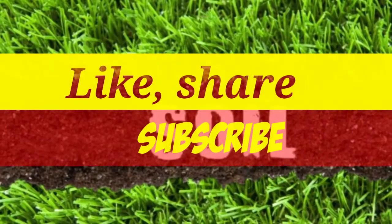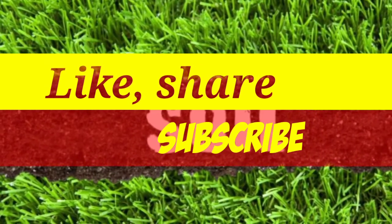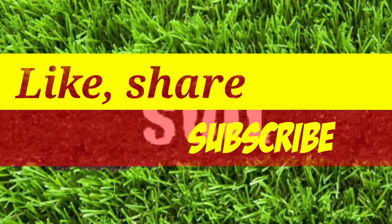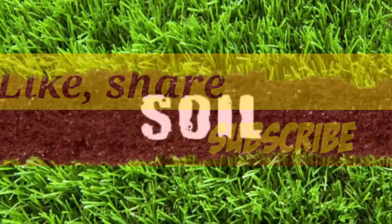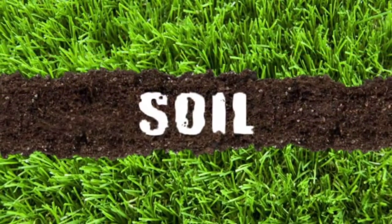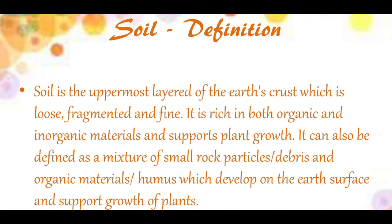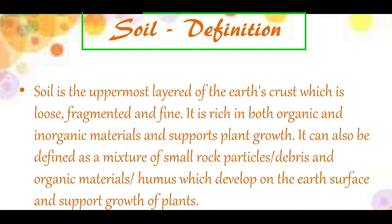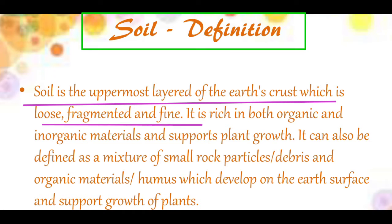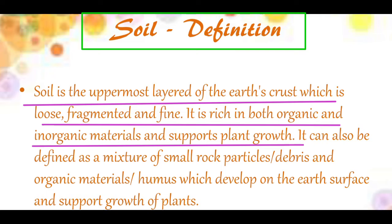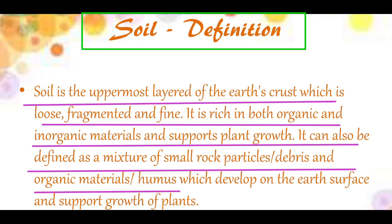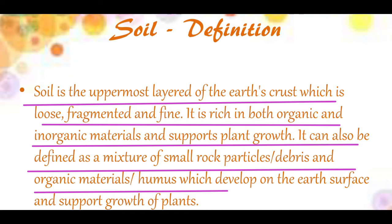If you like our content, please like, share, and subscribe to our channel. If you have any confusion, you can comment below. So let's start with the definition of soil. Soil is the uppermost layer of the earth's crust, which is loose, fragmented, and fine. It is rich in both organic and inorganic materials and supports plant growth. It can also be defined as a mixture of small rock particles, debris, and organic materials — humus — which develop on the earth's surface and support plant growth.